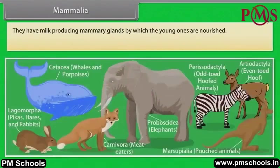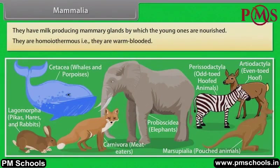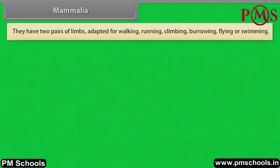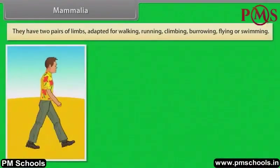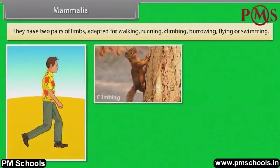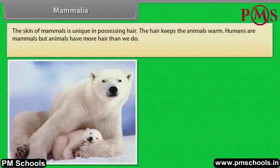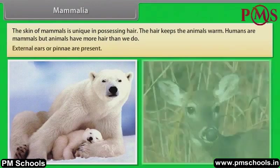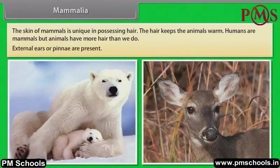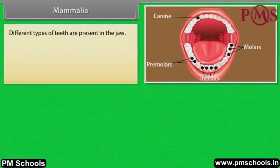Mammalia. They have milk-producing mammary glands by which the young ones are nourished. They are homeothermous, that is, warm-blooded. They have two pairs of limbs adapted for walking, running, climbing, burrowing, flying or swimming. The skin of mammals is unique in possessing hair, which helps keep the animals warm. Humans are mammals but animals have more hair than we do. External ears or pinnae are present. Different types of teeth are present in the jaw.